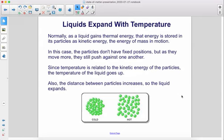Normally, as a liquid gains thermal energy, that energy is stored in its particles as kinetic energy, the energy of mass in motion. In this case, the particles don't have fixed positions, but as they move more, they still push against one another. Since temperature is related to the kinetic energy of the particles, the temperature of the liquid goes up.